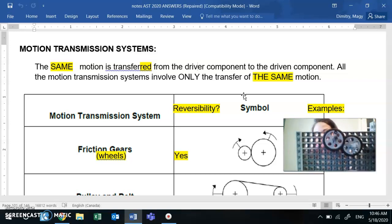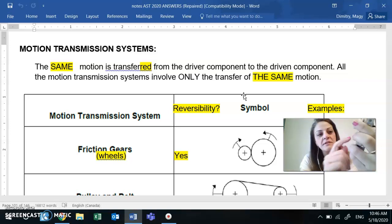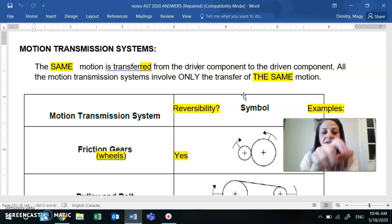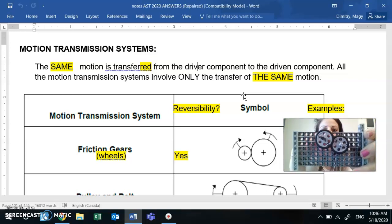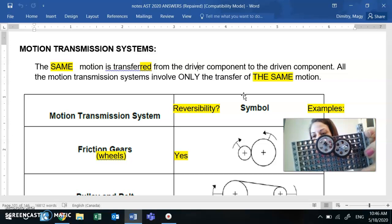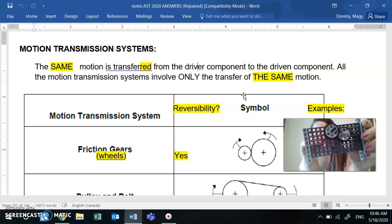The driver is the main component that does the movement, that starts the movement. And the other component, so component A, is the driven. Think of it as the passenger. You're just going to follow along with the driver. Again, the driver moves and as a consequence the driven moves because of the driver.